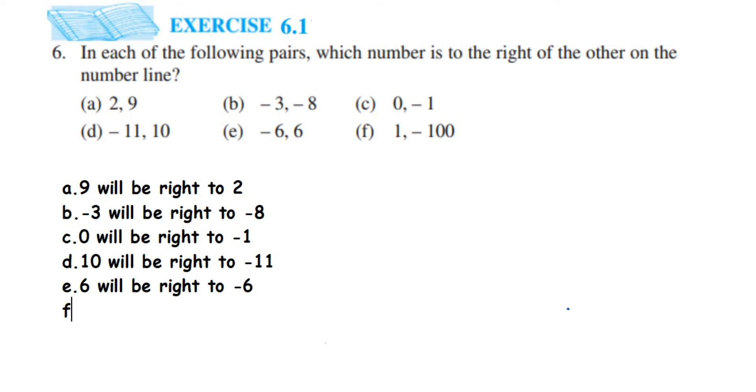The last one is 1 and minus 100. Though 100 is greater, it has a minus sign which makes the number less value. It becomes a smaller number. So minus 100 is smaller than 1, and we can say 1 will be right to minus 100.